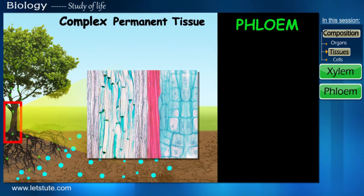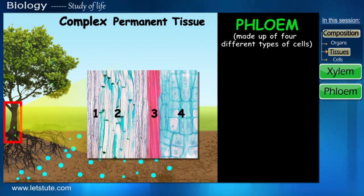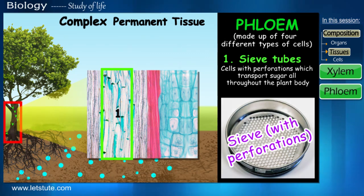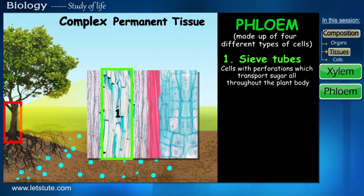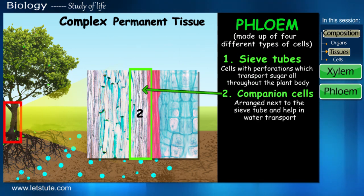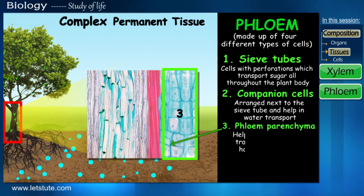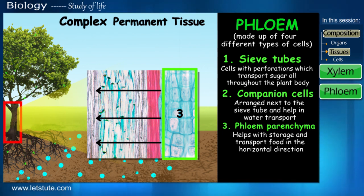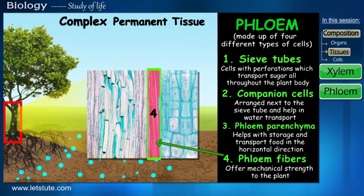The food in the form of sugar, made in the leaves, is transported with the help of another type of complex tissue called phloem. Since it is a complex tissue, it is made up of four different types of cells. The first and most important are the sieve tubes, which are attached end to end; their perforations allow sugars to be transported throughout the plant body. Accompanying them are the companion cells, arranged next to the sieve tubes. The third is phloem parenchyma, which stores food and also performs lateral transport to neighbouring cells. And lastly, phloem fibres — like xylem fibres — offer support and mechanical strength to the plant.